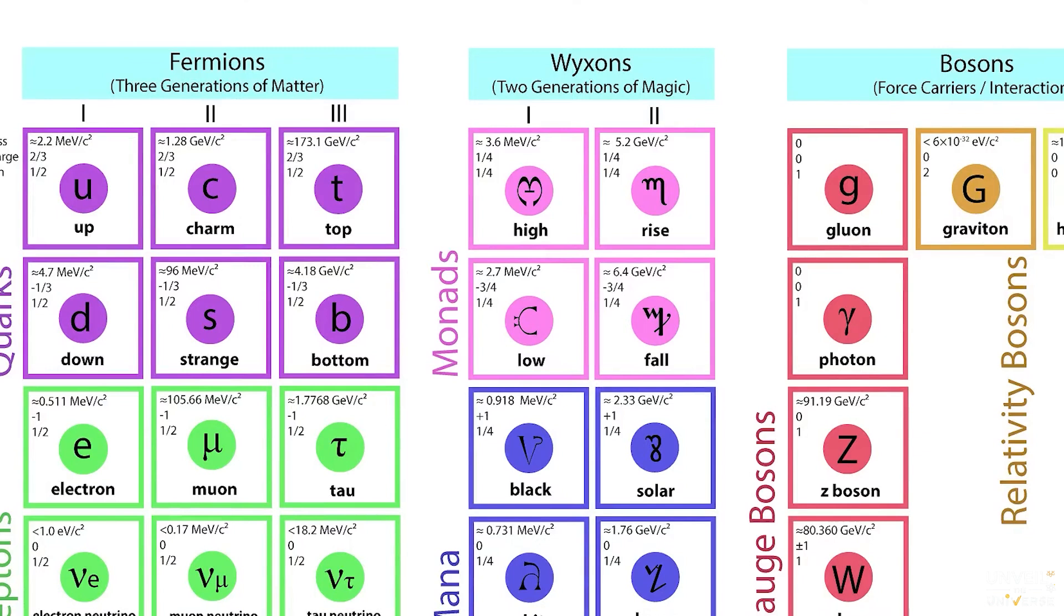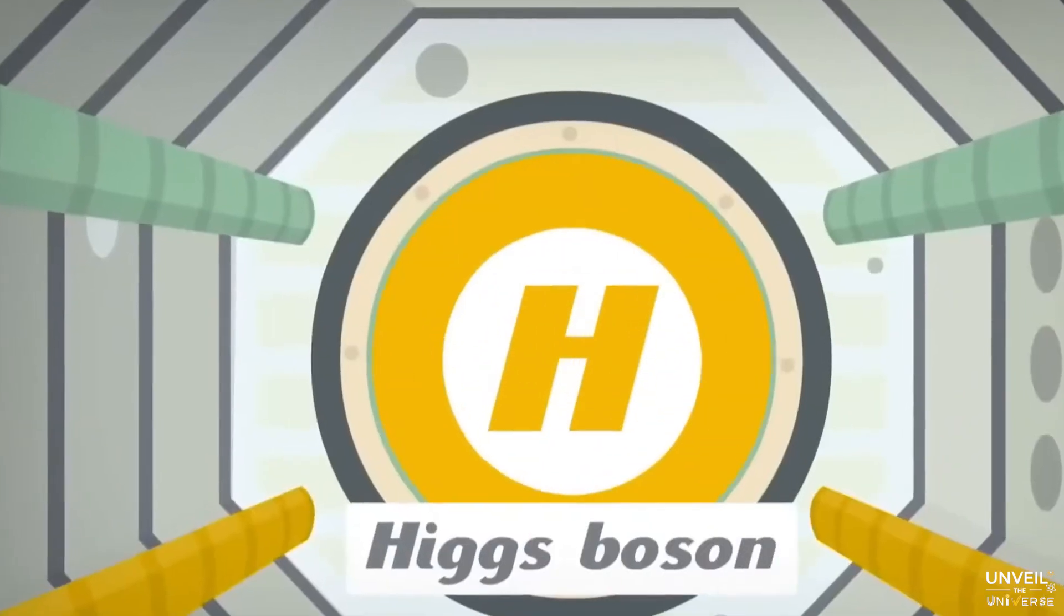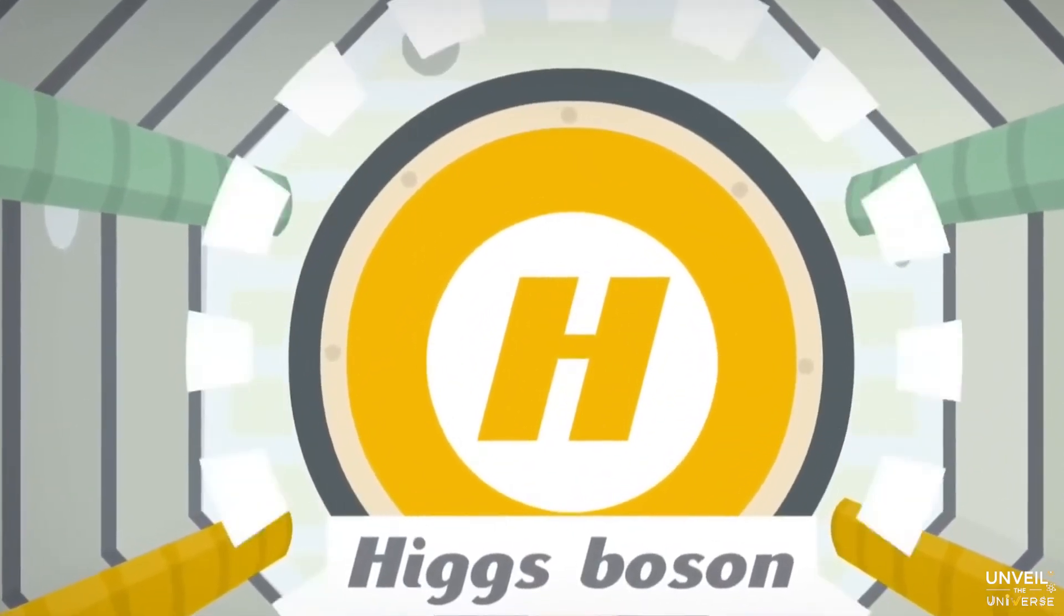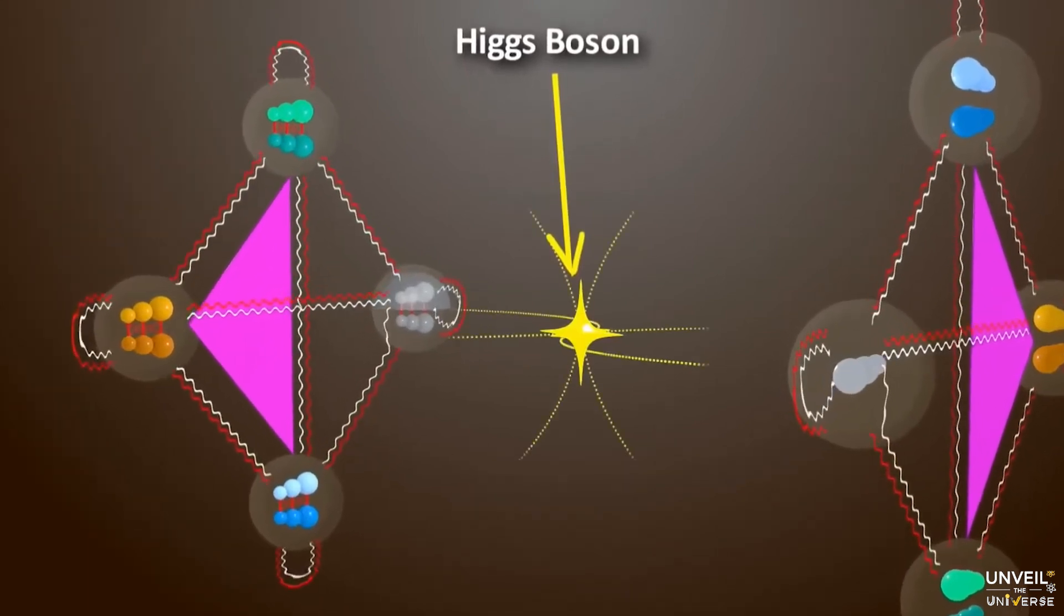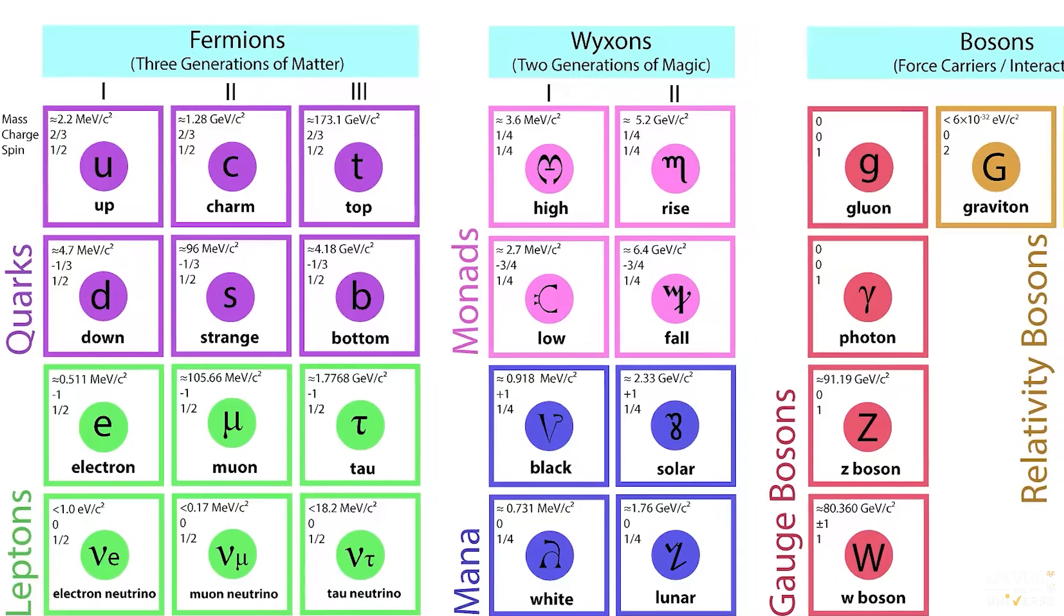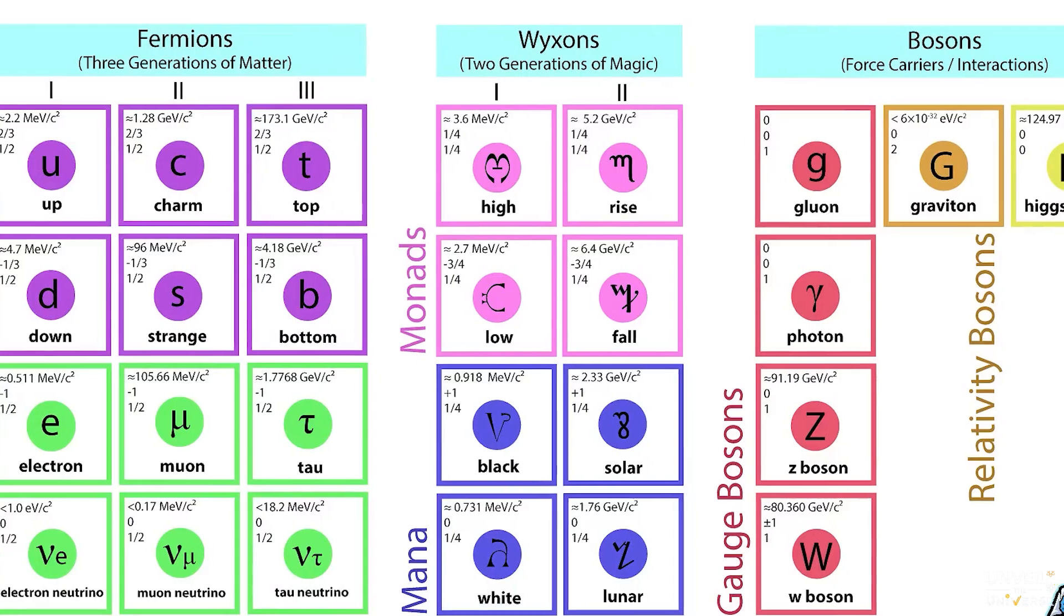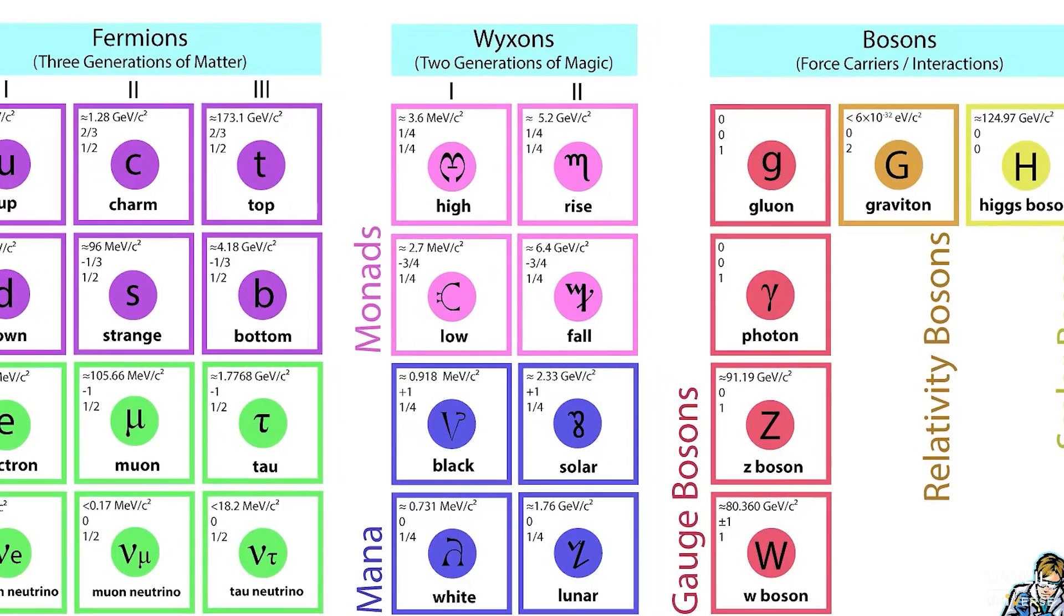In total, the standard model initially included 24 fundamental particles across these categories until it predicted the existence of a final particle, the Higgs boson, often referred to as the god particle. With the discovery of the Higgs boson, the standard model now comprises 25 distinct fundamental particles.